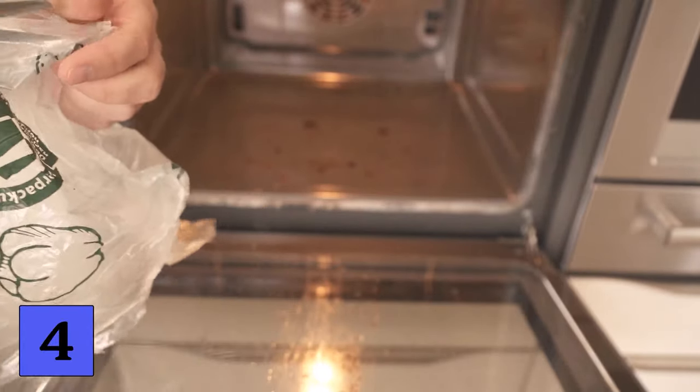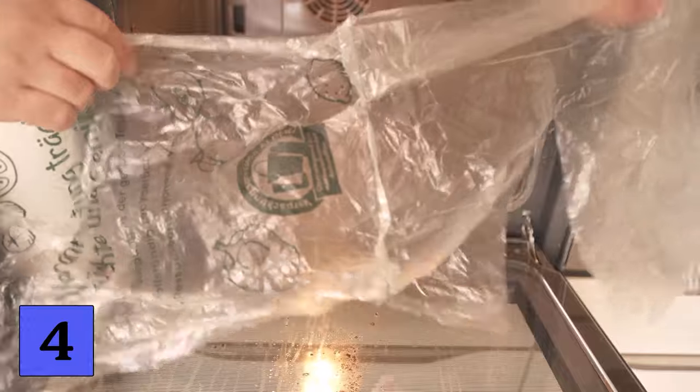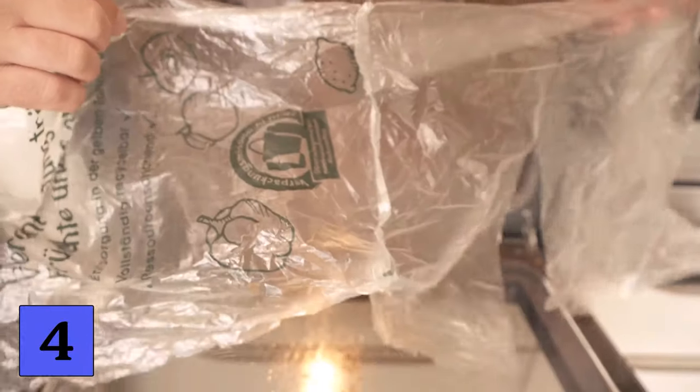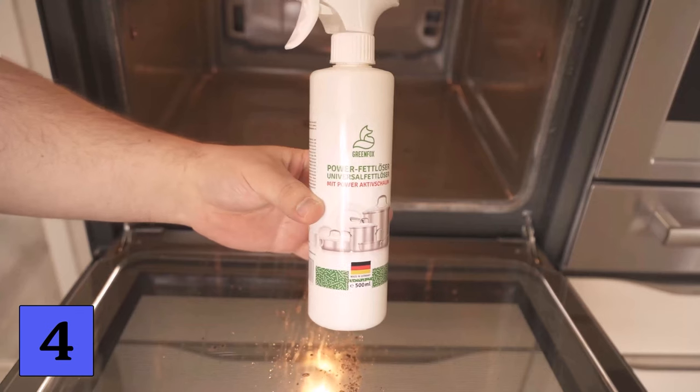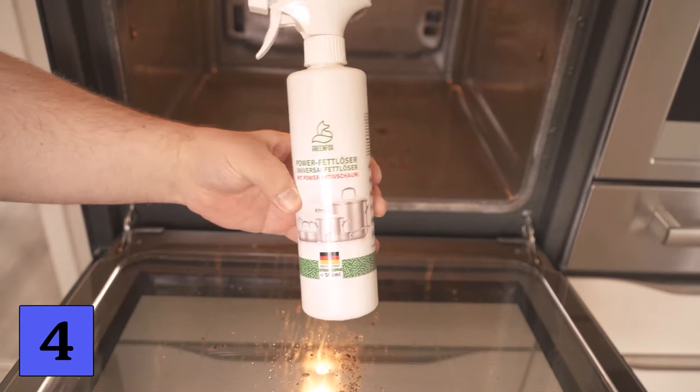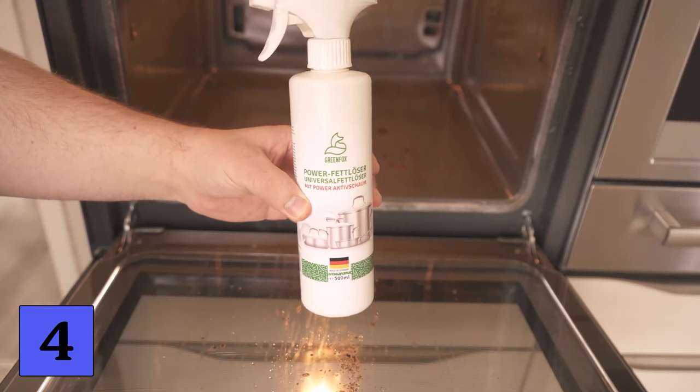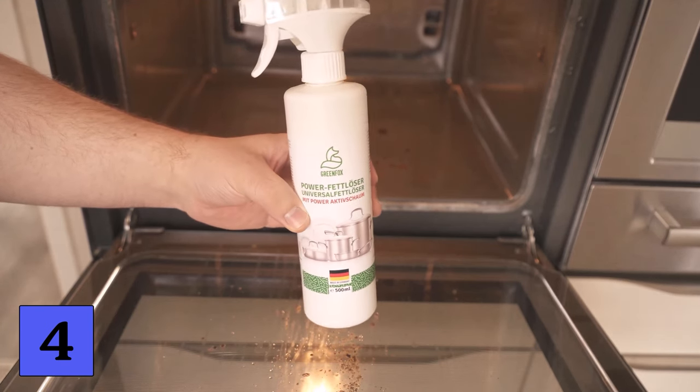To do this, you should cut the bags open so that you can lay them out flat. Of course you can use cling film just like that. And then you need a cleaner of your choice. I use my own power grease remover from my shop. You can find the link to the shop below in the video description. Feel free to visit the shop and order something if you like.